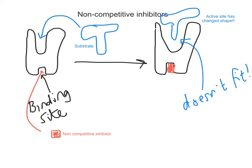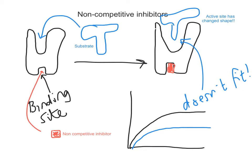Non-competitive inhibitors are quite sneaky, because basically when they are added to a reaction — let me make this clear — this is our substrate concentration graph again.